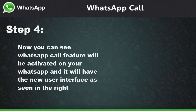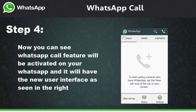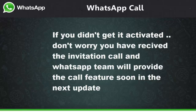You are done. Now when you return to WhatsApp, you can see the new user interface. As you can see in the image on the right of the screen, it indicates that your WhatsApp call is activated. If you didn't get it activated, don't worry — you will get it activated as soon as possible, as you have already received the invitation call.